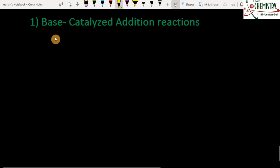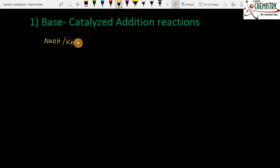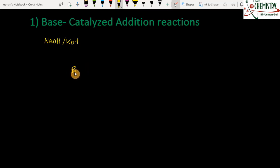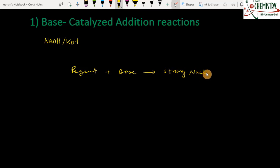First I will discuss the base-catalyzed addition reaction. These bases can be sodium hydroxide or potassium hydroxide. When reactions are done in these mediums, they are termed as base-catalyzed reactions. The general mechanism of base-catalyzed reactions is that first the reagent reacts with alkali or base, and when it reacts with base it gives us a strong nucleophile along with a water molecule.